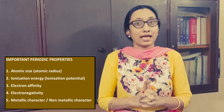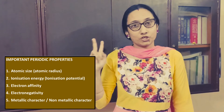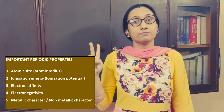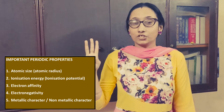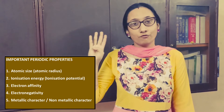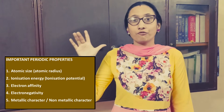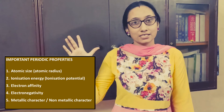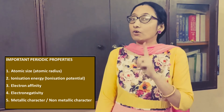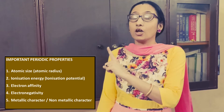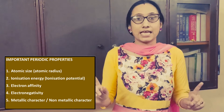We have six periodic properties in our syllabus. Number one: atomic radius. Number two: ionization potential. Number three: electron affinity. Number four: electronegativity. Number five: metallic character. Number six: non-metallic character. Now each one of the periodic properties we will discuss in detail.